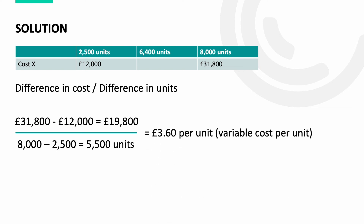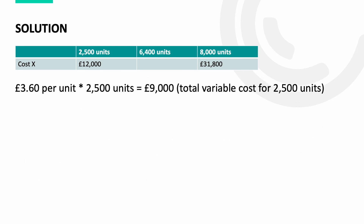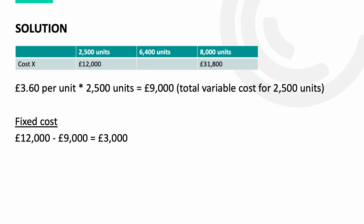We'll then pick a set of units — in this case 2,500 — so it would be £3.60 per unit multiplied by 2,500 units, giving a total variable cost of £9,000. To calculate the fixed cost, it would be £12,000 minus £9,000, giving a fixed cost of £3,000.